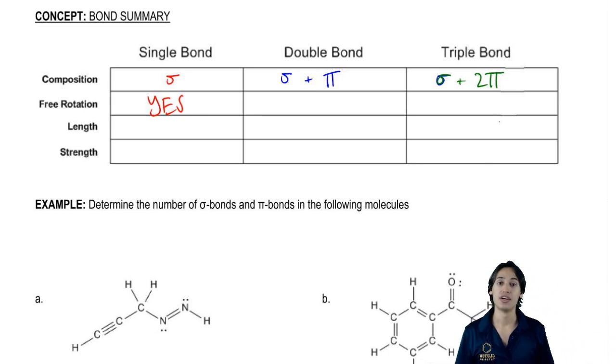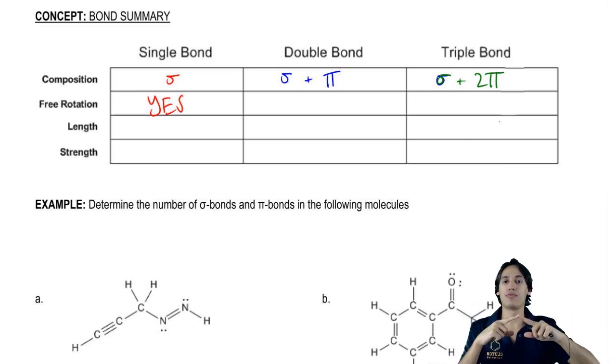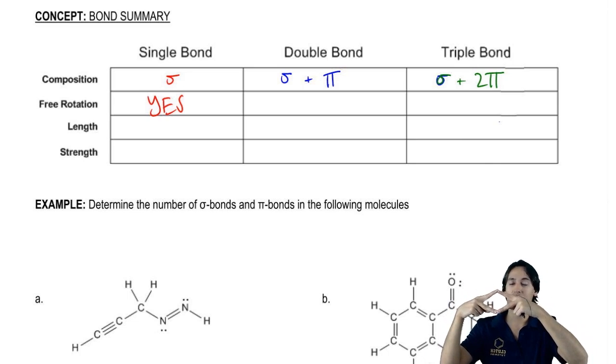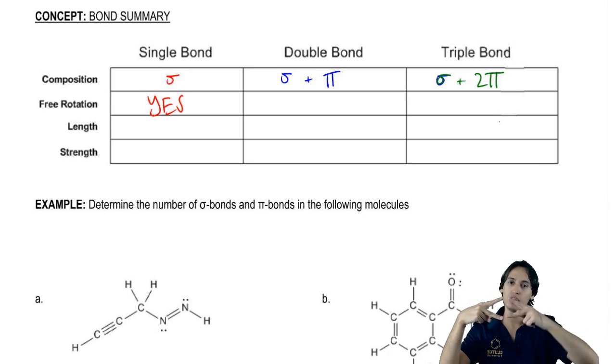Now let's look at double bonds. Double bonds have that region of overlap in the middle, that one area. But they also have regions at the top and the region at the bottom from the pi bonds. So it's going to look something like this where you have electrons overlapping at the top, electrons overlapping at the bottom.